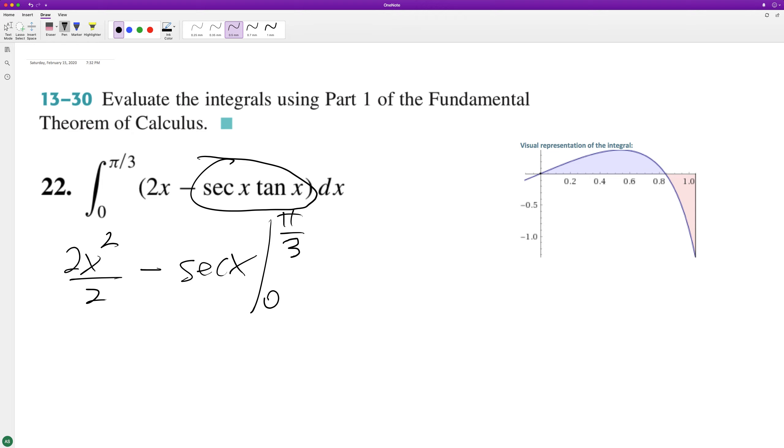and this is just x squared then. And so, starting off, pi over three squared is minus the secant of x, or secant of pi over three. Pi over three.